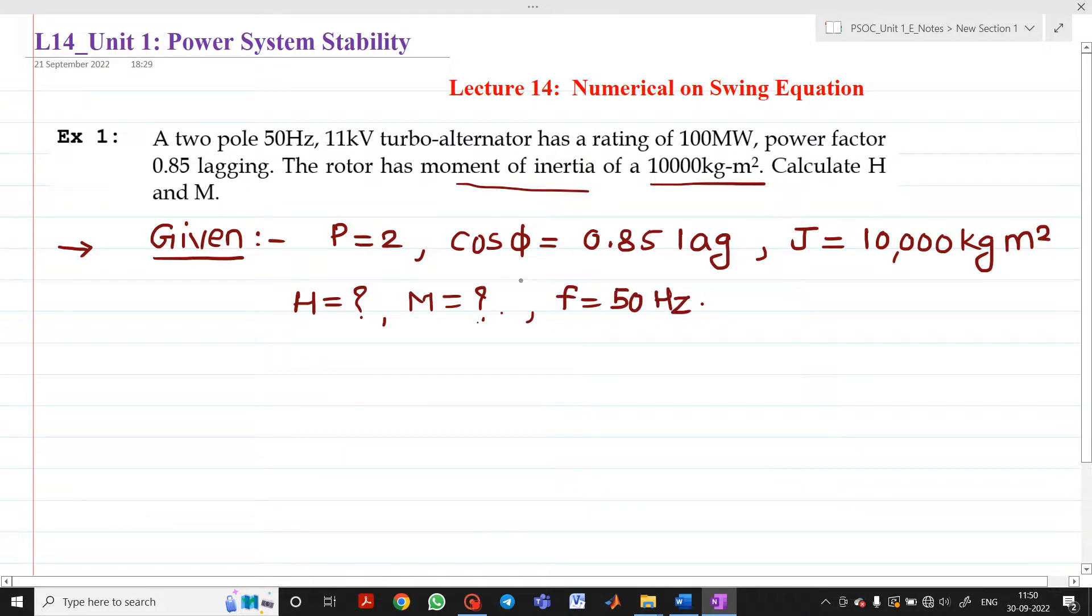Now we know that S equals V times I. S is in MVA. Therefore, S in MVA or the rating of the generator G equals V times I.